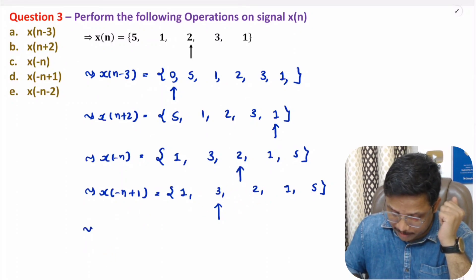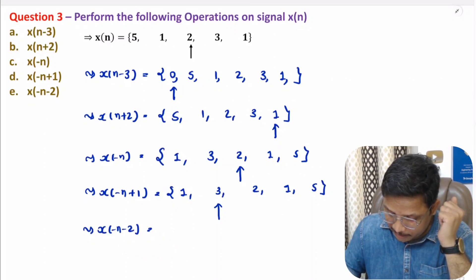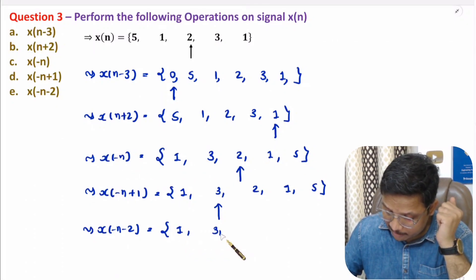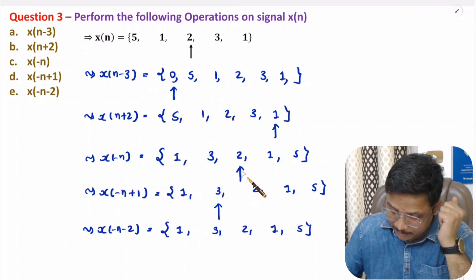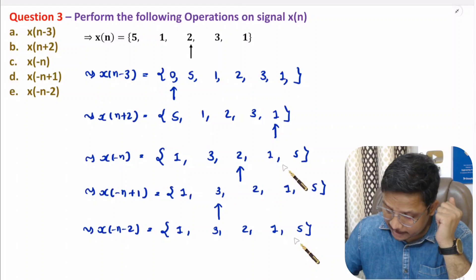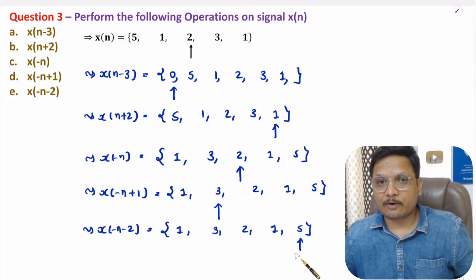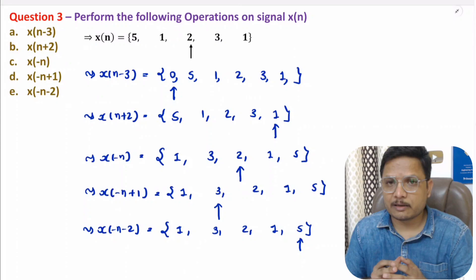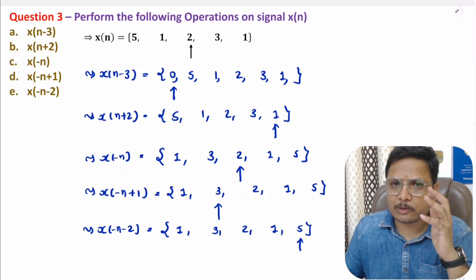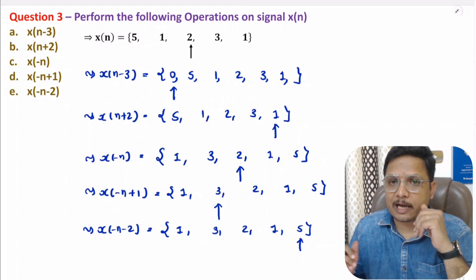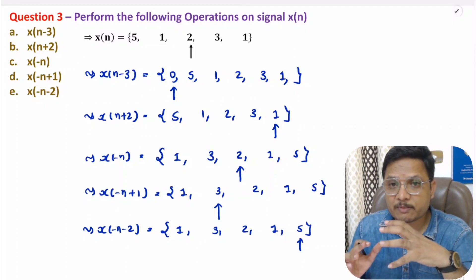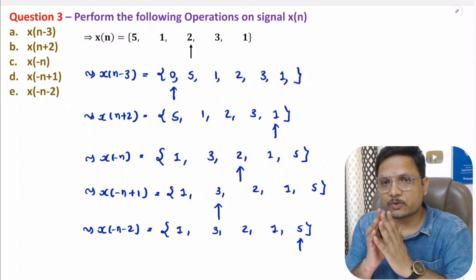Now the last operation is x(-n-2). We take the folded sequence reference of x(-n) and with minus two, shift the reference in the negative direction by two elements, so the reference moves to position plus five. That is how we perform the shifting operation. In this video I have explained almost all the rules based on operations on signals. I hope you now have a fair idea of how to solve problems based on signal operations. Thank you so much for watching.